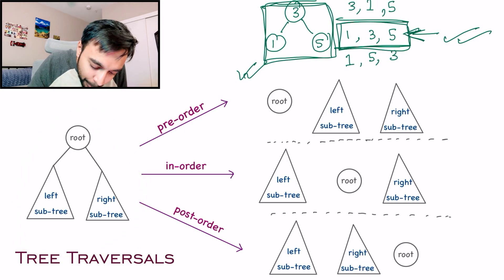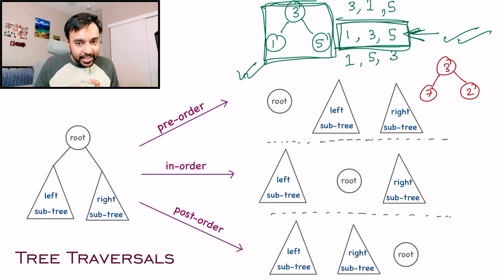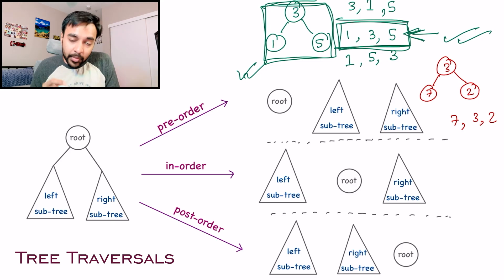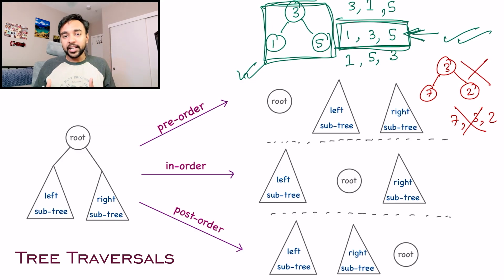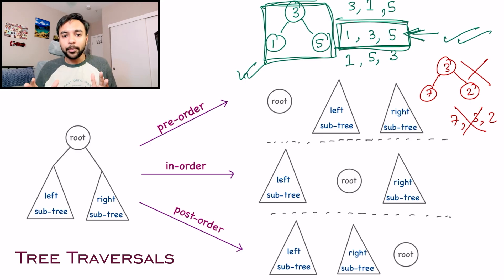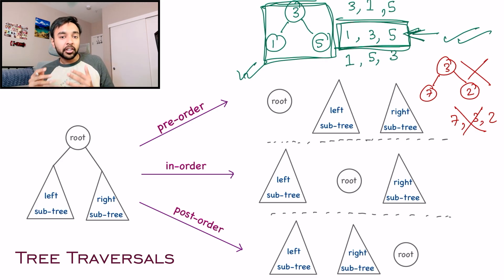Let us look at one more example. Suppose I have a tree that is clearly not a binary search tree. If I try to do an inorder traversal of this tree, I get seven, then three, and then two — which is not sorted in ascending order. So we can clearly see that this was not a binary search tree. Based on this concept, if on doing an inorder traversal you get a completely sorted sequence, then your tree was a binary search tree; otherwise, that can never be possible. If you want a quick recap on how preorder, inorder, and postorder traversals work, there is a link in the description below.